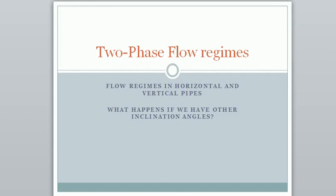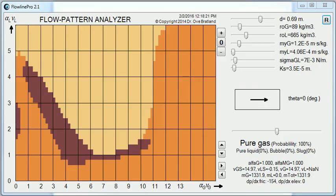Welcome to this video about two-phase flow regimes. We will have a look at flow regimes in horizontal and vertical pipes, and we will see what happens if we have other inclination angles. We will partly do it by using this flow pattern analyzer, which is an integral part of Flowline Pro.